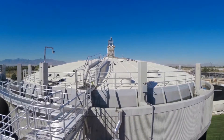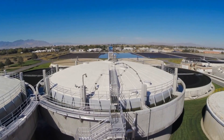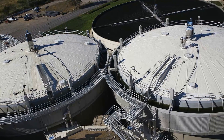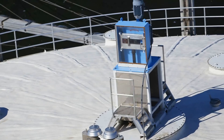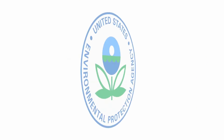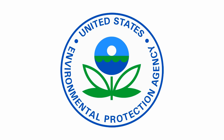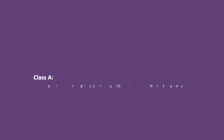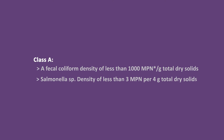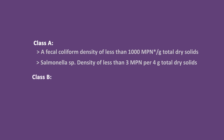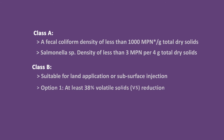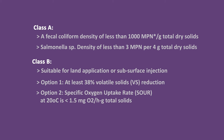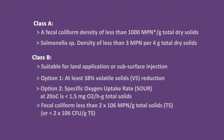Digestion forces microorganisms to starve, feed off themselves, and subsequently die in the absence of any externally available food. The United States Environmental Protection Agency has well-defined criteria for Class A biosolids, which can be reused, and Class B biosolids, which can be land applied. Aerobic digestion usually aims for reduction of volatile solids, specific oxygen uptake rate, and pathogens present in the sludge.